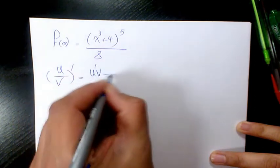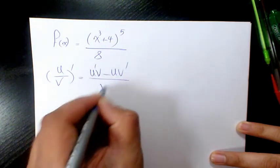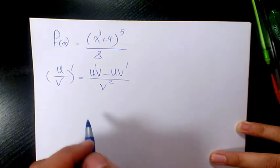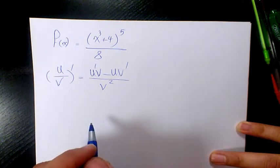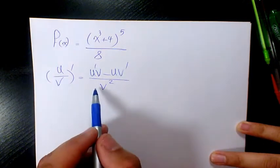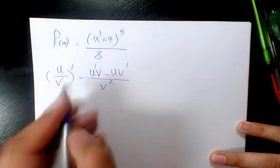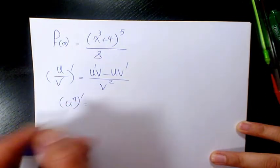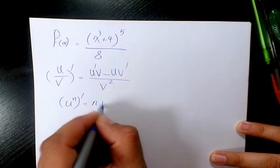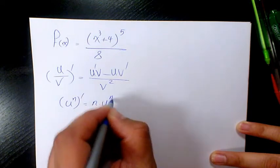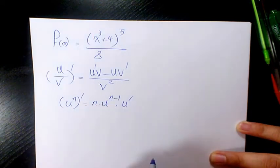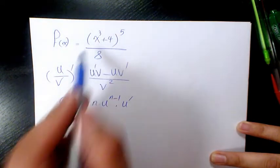u prime v minus u v prime divided by v squared — that's how we do the quotient rule. On the other hand, if we have u to the power of n and we want to find the derivative, it's going to be n times u to the power of n minus 1 times u prime.